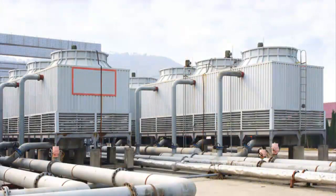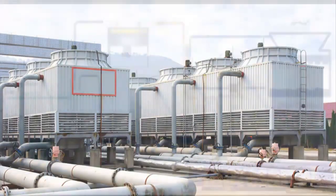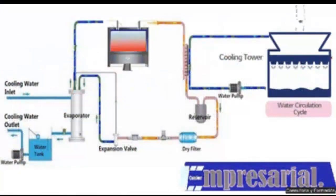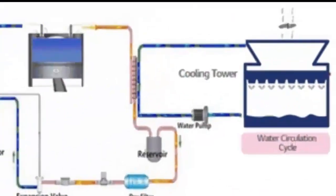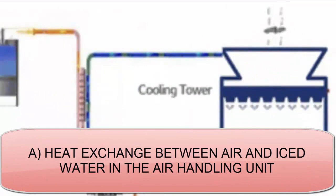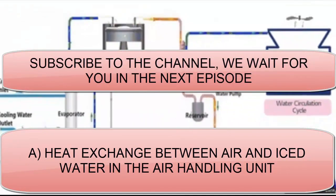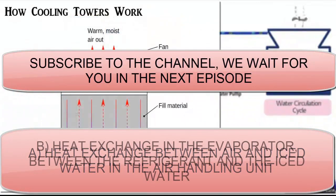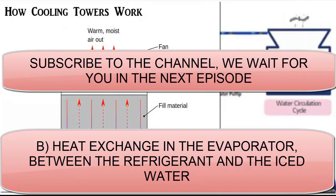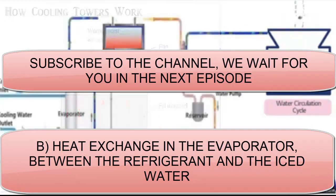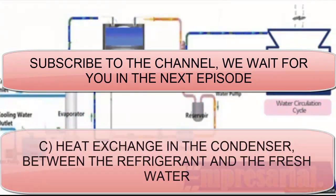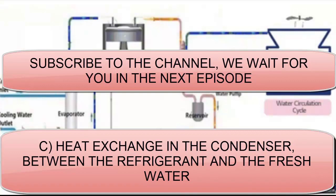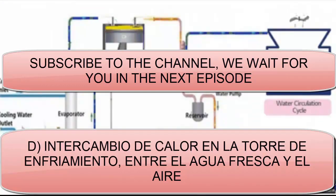Question 19: How many heat exchanges do we have in an installation with a chiller cooled with fresh water? We have four heat exchanges. A. Heat exchange of the chilled water with the internal air of the premises, to cool the air of the building. B. Heat exchange of the refrigerant within the refrigeration circuit, to generate the ice water. C. Heat exchange of the refrigerant of the refrigeration circuit with the fresh water circuit, to send the heat of the condenser refrigerant to the environment. D. Heat exchange of the fresh water with the outside air, to cool the fresh water.